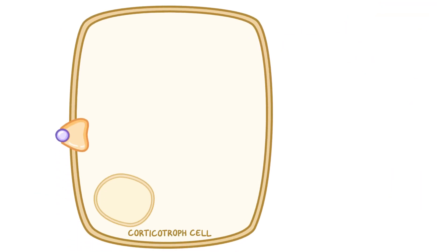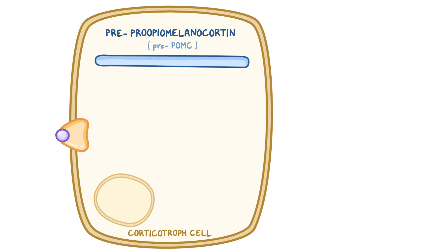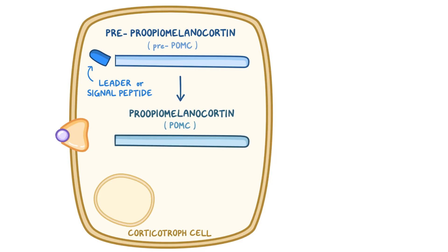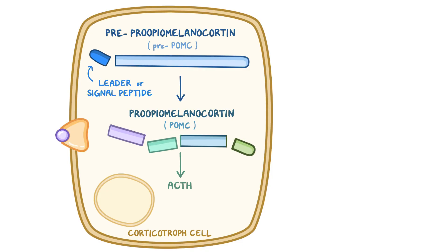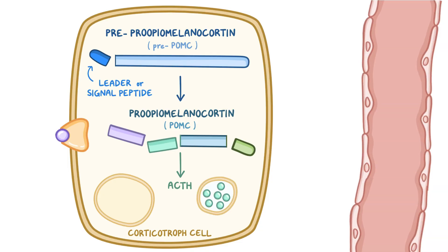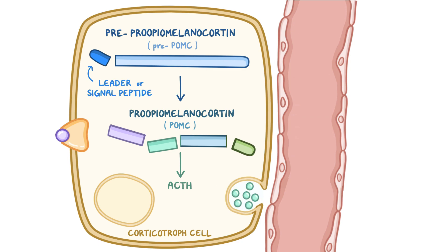Inside corticotroph cells, ACTH is synthesized from a large precursor molecule called pre-proopiomelanocortin, or pre-POMC. Pre-proopiomelanocortin has a short tail called a leader or signal peptide, which is cleaved off to form proopiomelanocortin, or POMC. POMC is then split into multiple peptide hormones, and one of them is ACTH, which is then stored inside granules within the corticotroph cells, where it waits until it's released into the blood.